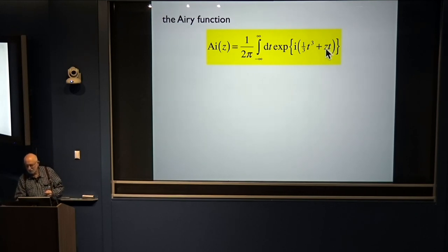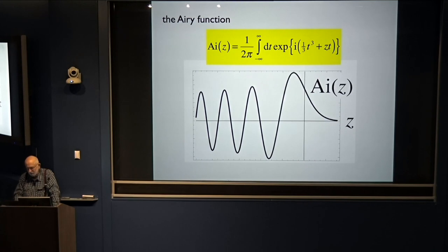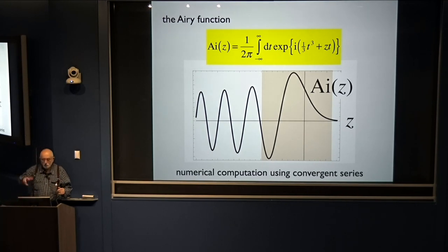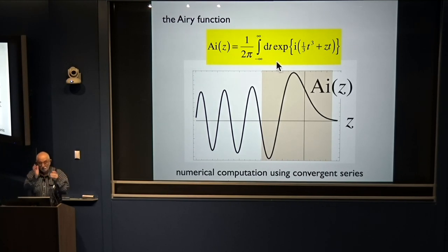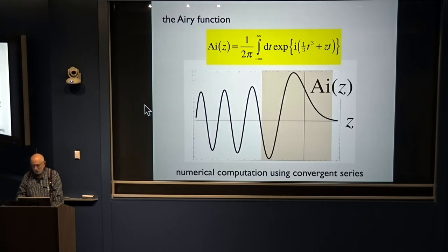Airy was disappointed that he couldn't compute his function except in a rather small region near the origin. There's a convergent series he could use for that. If you square it up, it just describes the first two intensity maxima, and experiments had been done on globes of water — artificial rainbows — and people had measured about 30 of these fringes. Airy couldn't compare his theory with experiment because he couldn't calculate the function. So the first real hero of this story is Stokes, ten years later.